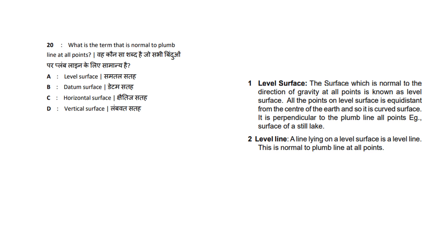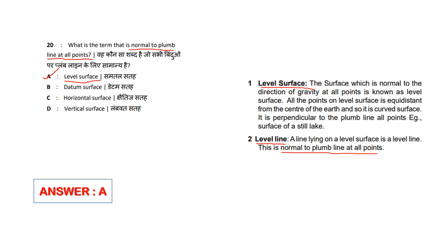Next question: What is the term that is normal to the plumb line at all points? I will explain level surface and level line. The term normal to the plumb line at all points is level surface. The answer is option A: Level surface — it is normal to the plumb line at all points.